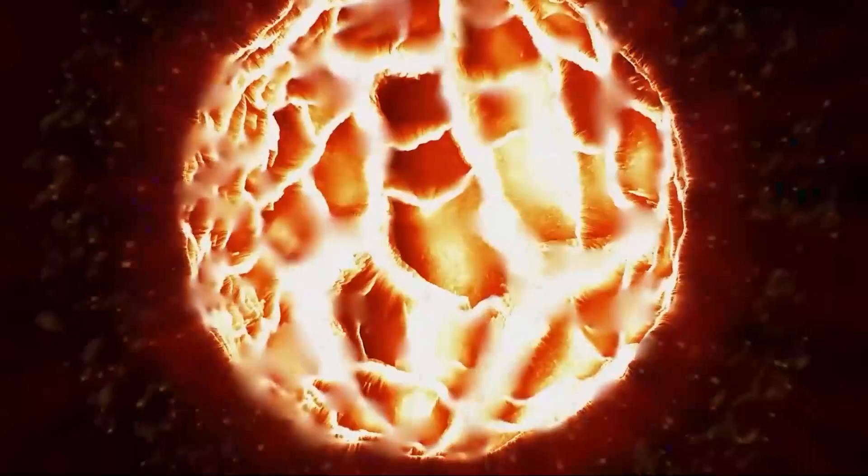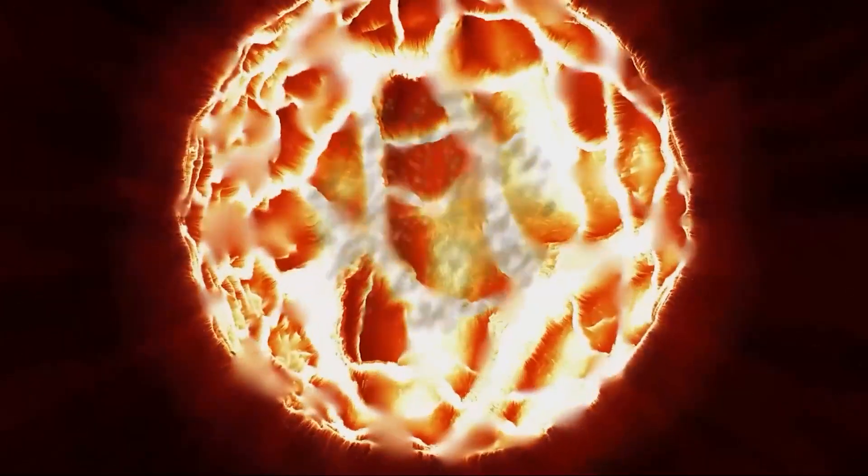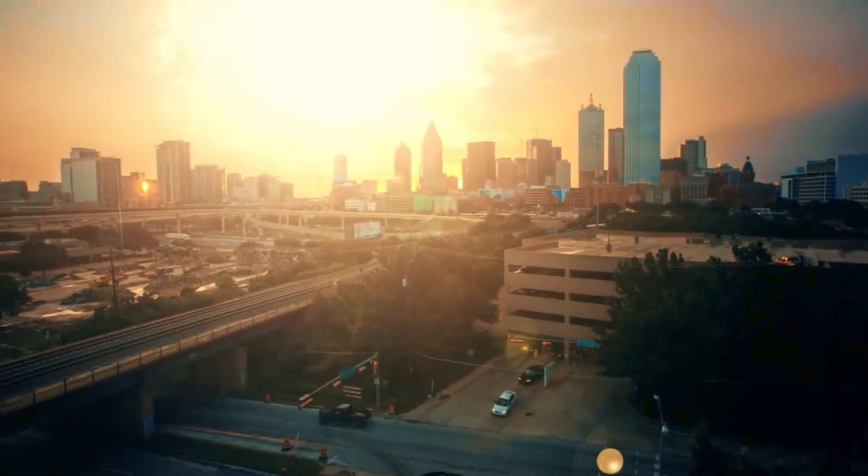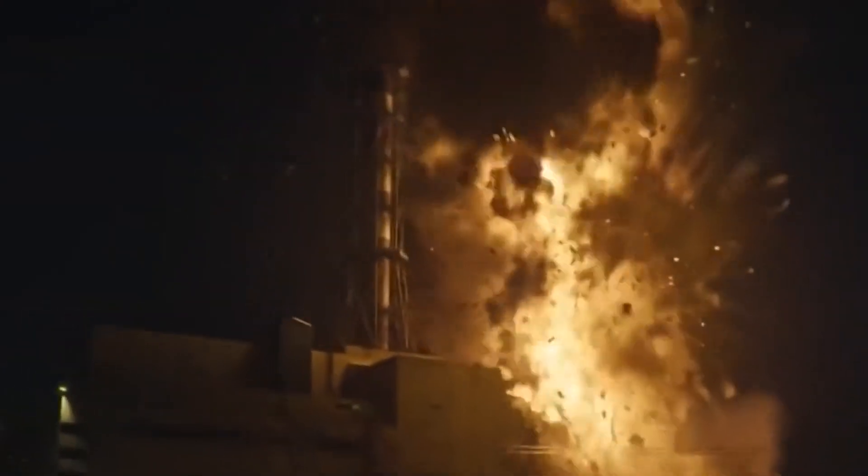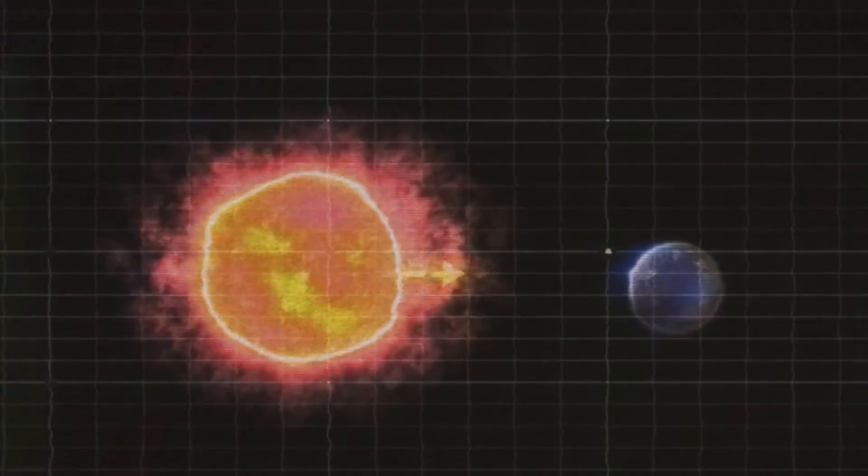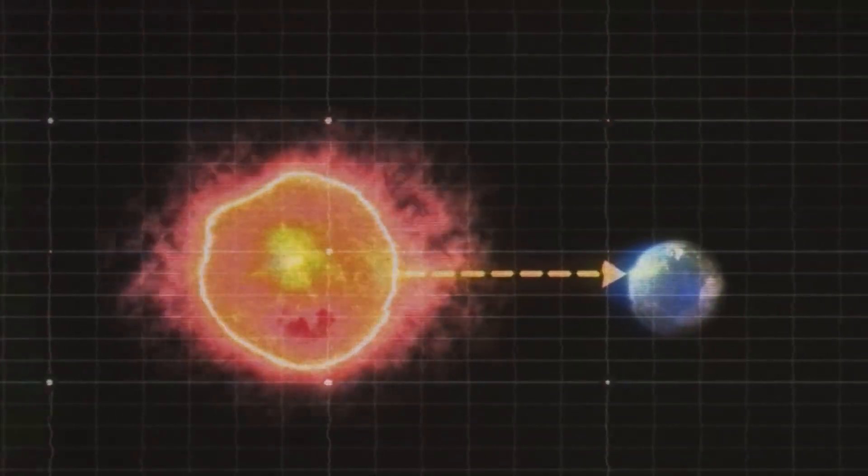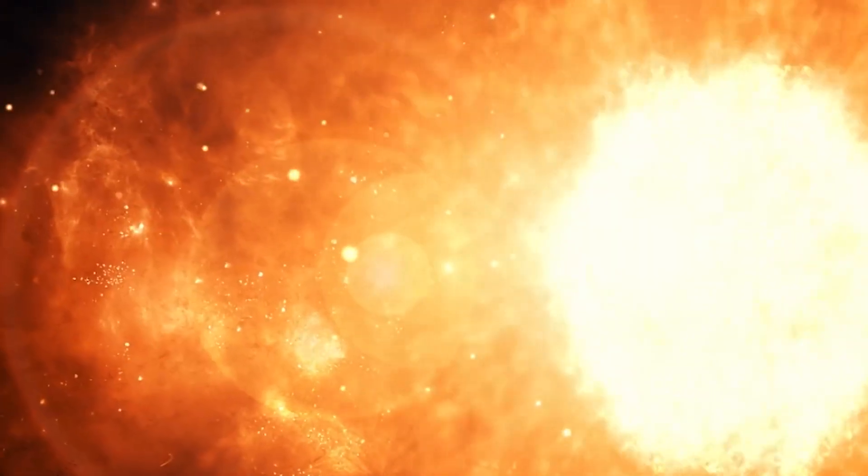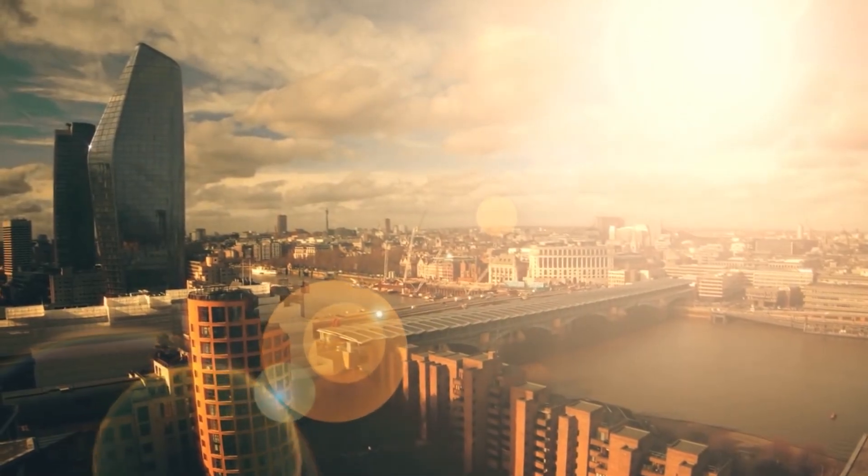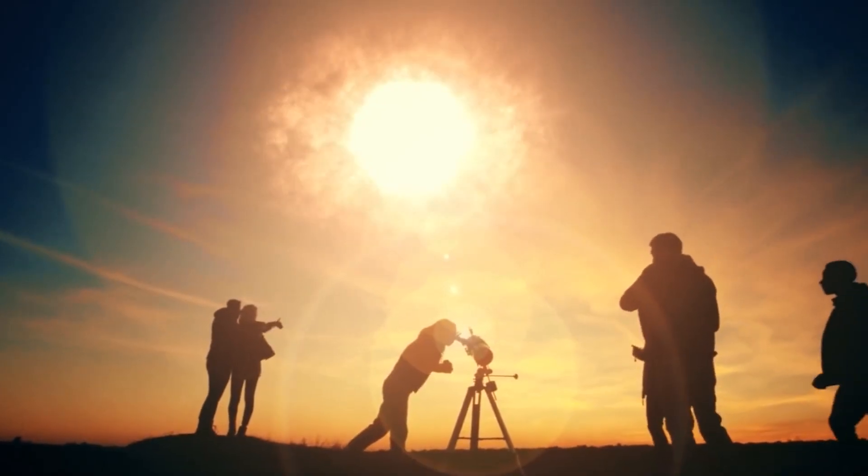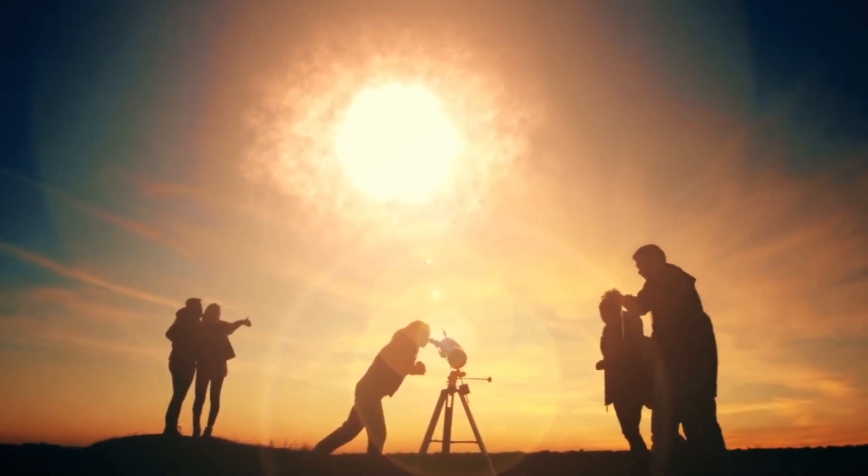It may happen right now, or in a million years. But we shouldn't worry about it. The Betelgeuse explosion will not destroy or even endanger life on Earth since it will occur too far away. Astronomers believe that a supernova must be 50 light-years away for it to be lethal to humans, and Betelgeuse is more than 10 times that distance away. Instead of endangerment, everyone on Earth will be treated to a spectacular view of an incredibly bright star in the night sky.